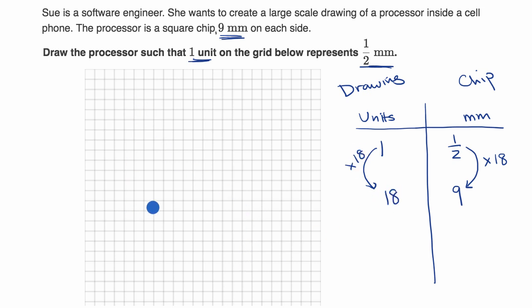So if I want to do a scale drawing right over here, it's going to be a square. It's a square chip. And since the scale is one unit represents half a millimeter, 18 units would represent nine millimeters.